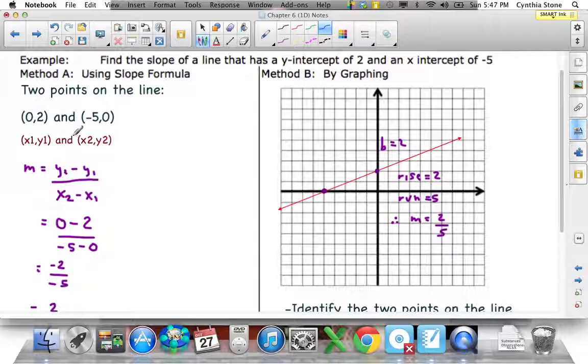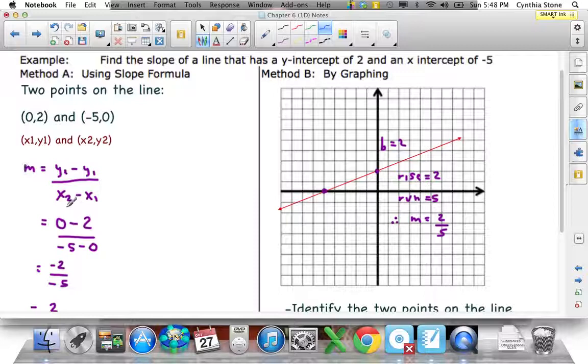Find the slope of a line that has a y-intercept of 2 and x-intercept of minus 5. Two ways we can do that. The first one we're going to do is using the slope formula. So, the slope formula is what I have written right here. That's the slope formula. We know 2 points on the line. Because we know the intercepts, and that tells me if the y-intercept is 2, that's 1 point on the line. And if the x-intercept is negative 5, that's another point on the line. We'll call this one x1, y1. We'll call this one x2, y2.